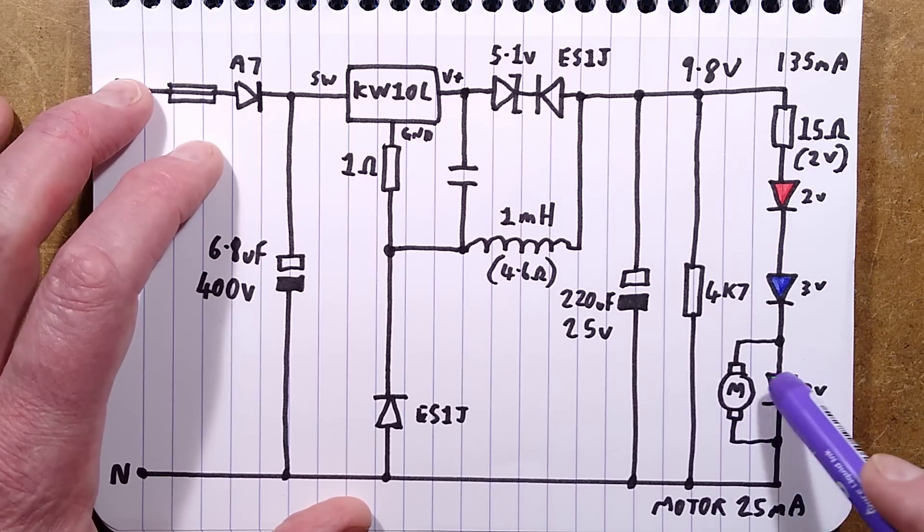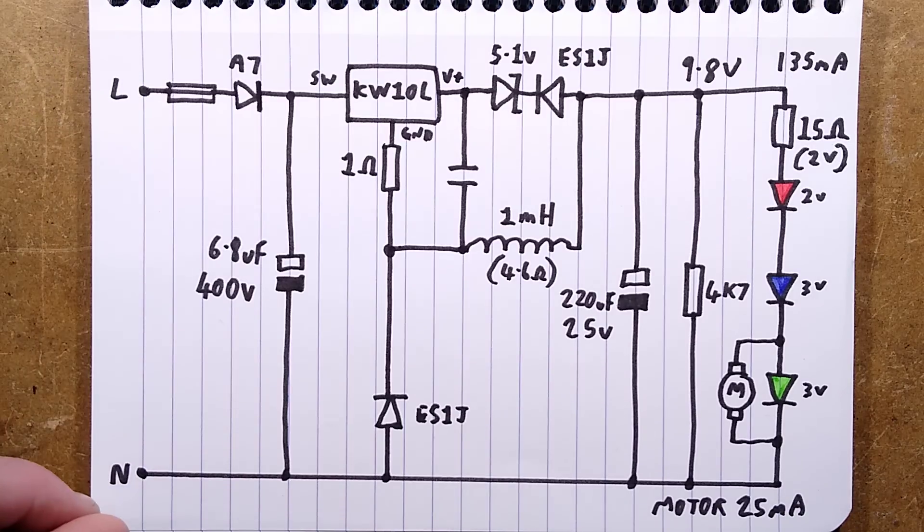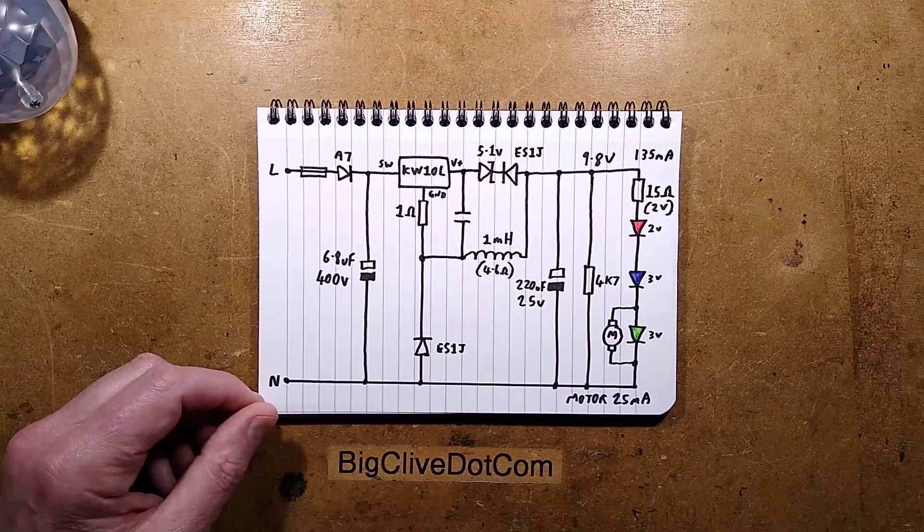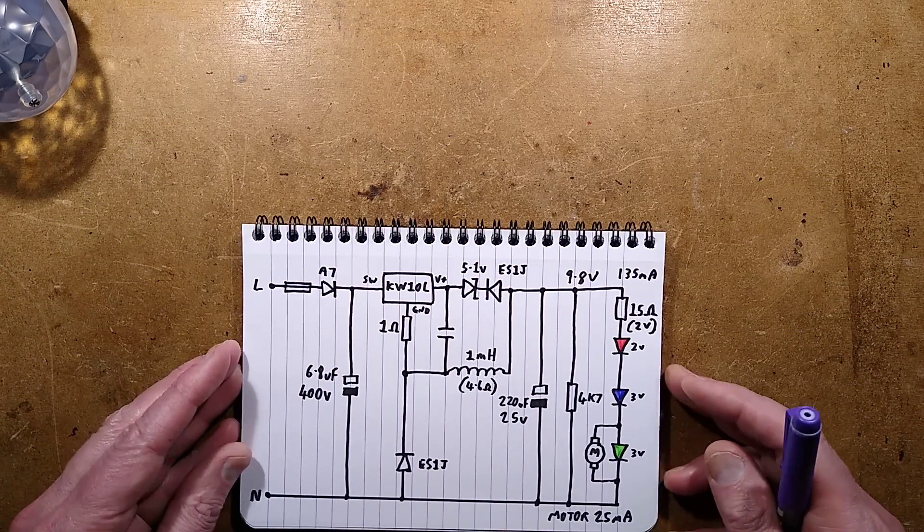And then they're dropping 2 volts across the 15 ohm resistor, and there's the motor tapped across the green LED with its 25 milliamps. That is it. It's a very simple circuit. They've really cut this down to the bare minimum. I guess ultimately it's a cost-saving exercise.